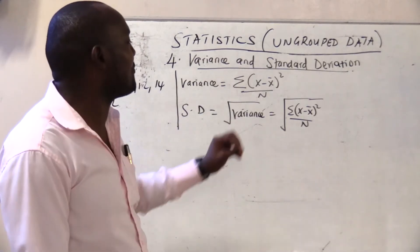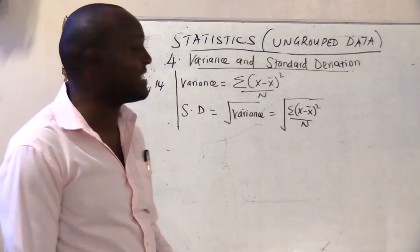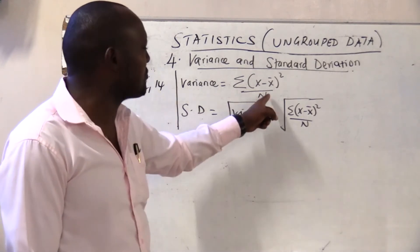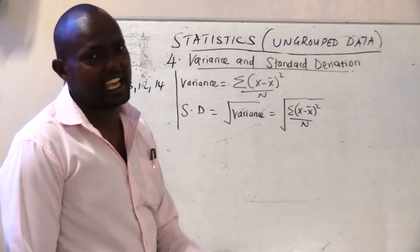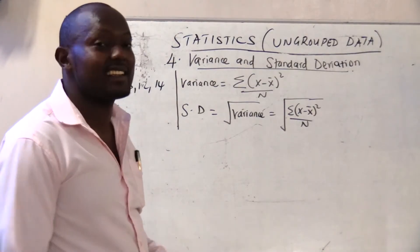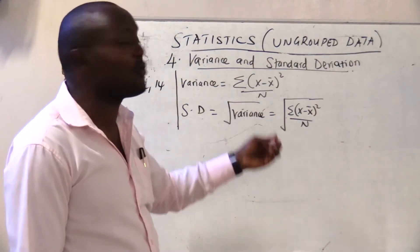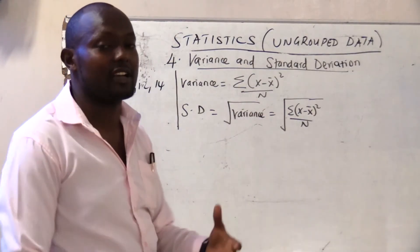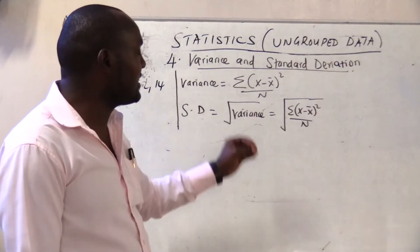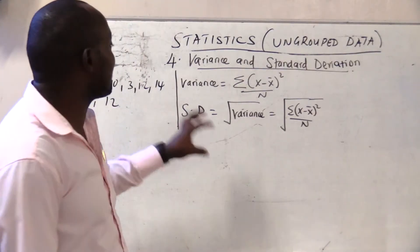You may find that in some books they are using n minus one, but the value will be significant in that case. So here we are calculating variance using n.